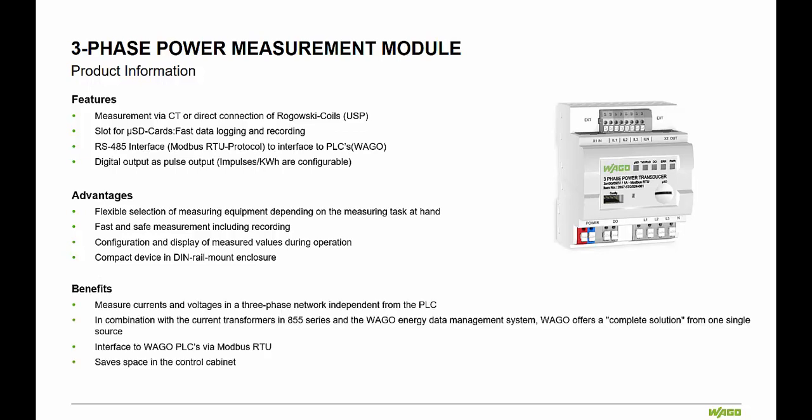Additional benefits include: measure currents and voltages in a three-phase network independent from the PLC. In combination with the current transformers and the Wago Energy Data Management System, Wago offers a complete solution from one single source, interface to Wago PLCs via Modbus RTU. Due to compact design, space savings in the control cabinet.